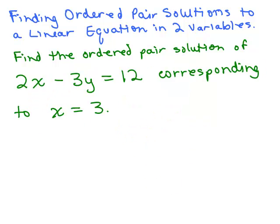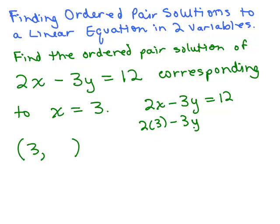Here's another one. Find the ordered pair solution of 2x minus 3y equals 12 corresponding to x equals 3. So again, I know the x coordinate is going to be 3, so I could put that in. Now we've got to take this equation, 2x minus 3y equals 12, and we're going to plug in 3 in place of x.